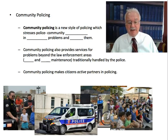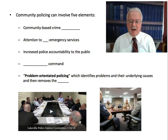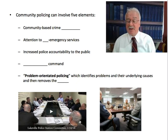Community policing can involve five elements. The first is community-based crime prevention. The second is attention to non-emergency services, often related to quality-of-life crimes. There's a theory that when the quality of life in a neighborhood goes down — poor services, littering, garbage, abandoned buildings — this causes criminals to think they can commit crime there, causes good people to leave, and leads to destabilization and ghettoization. So community policing police intervene in these non-emergency areas to get lots cleaned, services restored, and landlords to fix up houses.